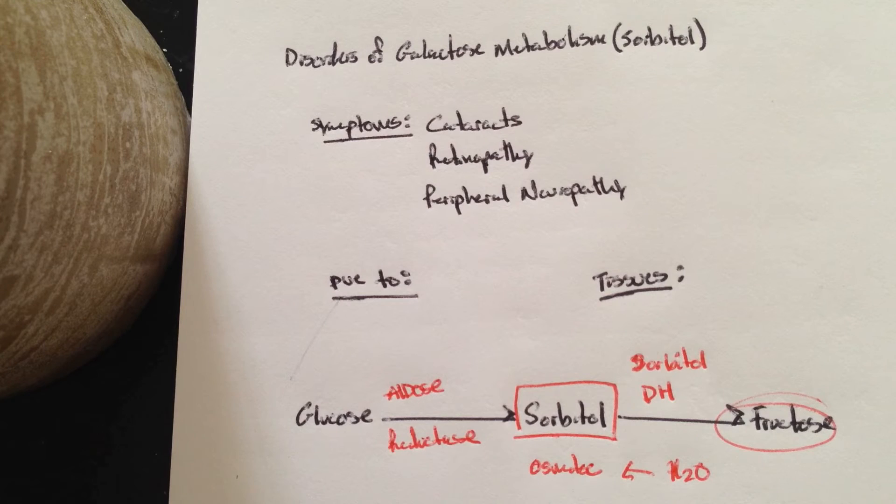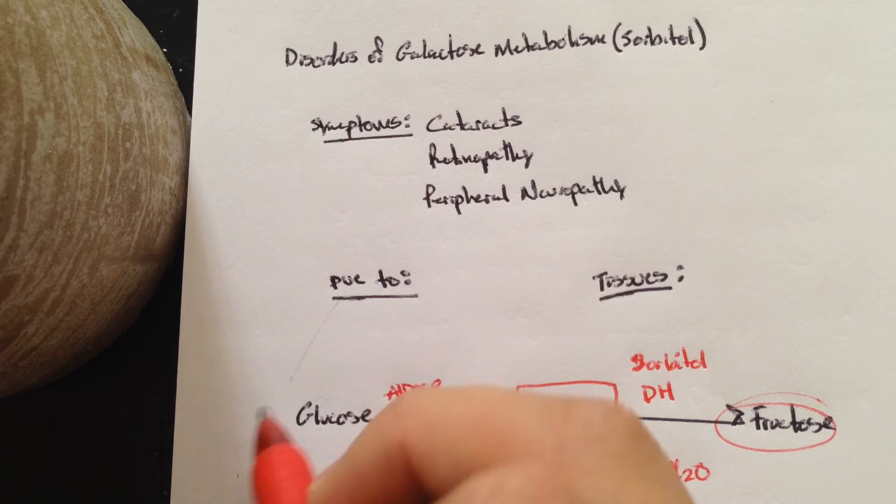So that's why on your boards you may see a question talking about a diabetic person who has elevated levels of glucose, or they may be talking about cataracts in an older person, and you want to start thinking about this pathway right here.